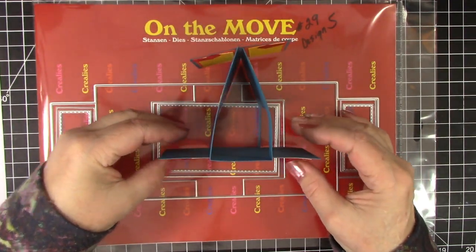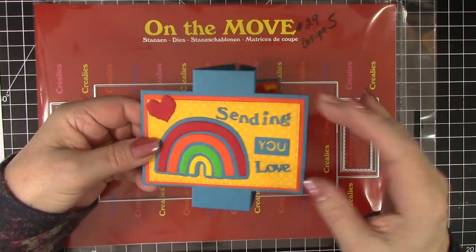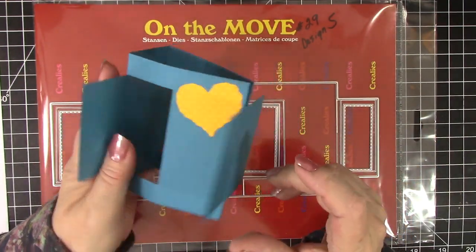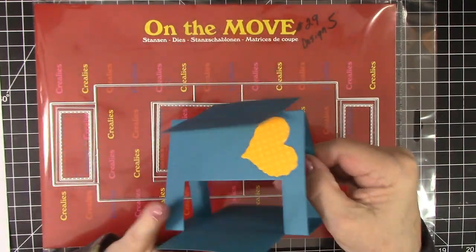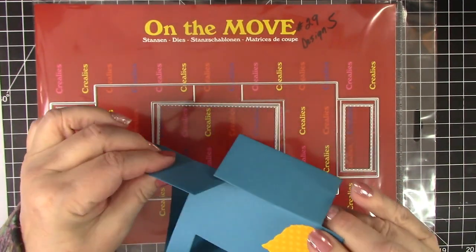See, it stands up like that. It has the front flap that you can decorate and then you have your sides and the back. There is a slot back here.